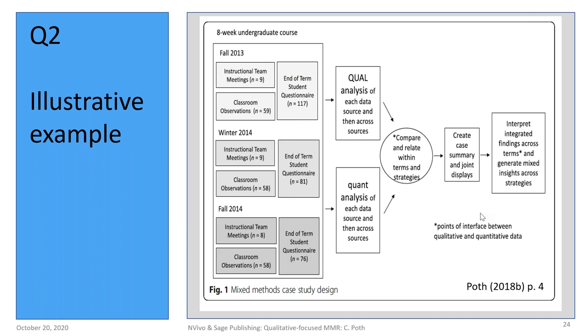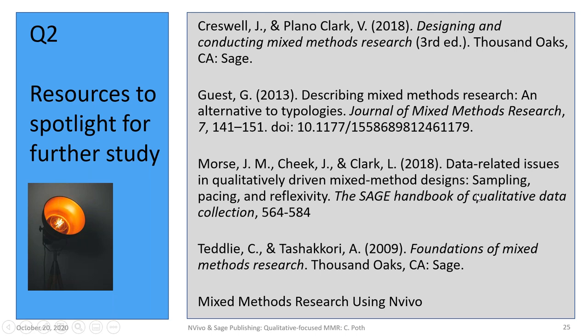Some design resources: the Cresswell and Plano-Clark book; a great article that started the discussion about moving beyond typologies; Jan Morris has a great article on sampling and reflexivity; and Teddlie and Tashakkori (2009), which is being updated, has a typology of 32 designs — these give more diversity, though they're harder to access. There are also NVivo webinars talking about how to manage your data within NVivo once you have a design.